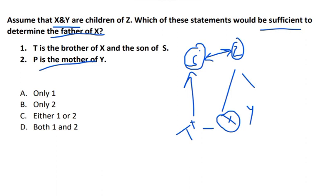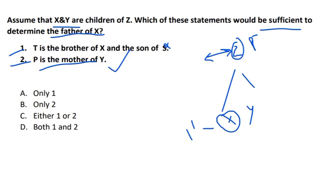Statement 2: P is the mother of y. If P is the mother of y, and x and y are both children of z, then z must be the father. So from statement 2 alone we can determine the father of x. Statement 1 alone was not sufficient. The correct answer is option 2 only.